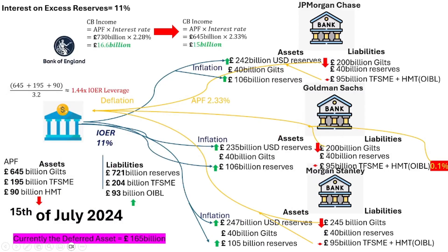We talked about how the central bank's assets generate passive income or deflationary interest, and this is offset by the interest on excess reserve expense that the central bank pays out to all its reserves in the system. This is inflationary, and at a certain interest rate, especially when leveraged, it offsets the interest income and introduces more reserves into the system than it takes out, pushing liabilities towards infinity and assets towards zero. This is offset by a deferred asset that the central bank uses to cover it up.